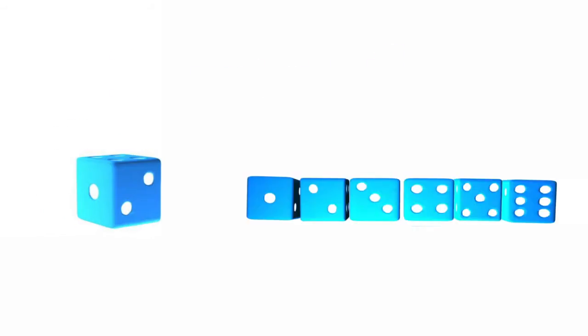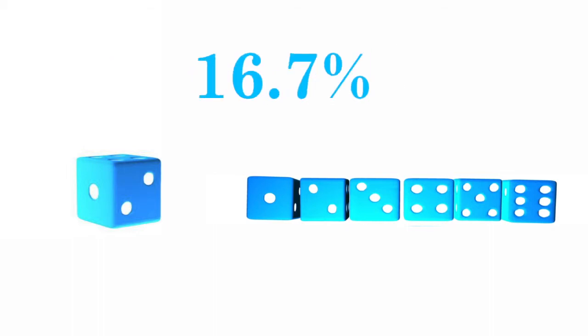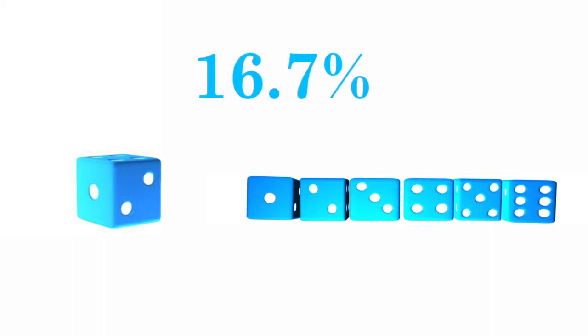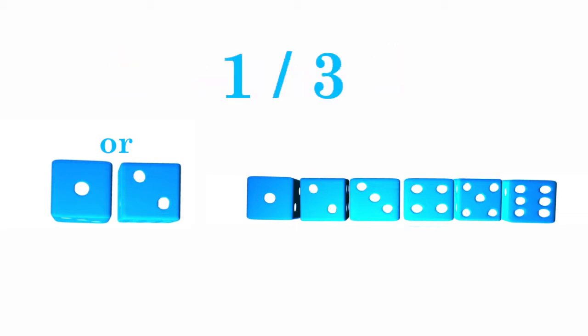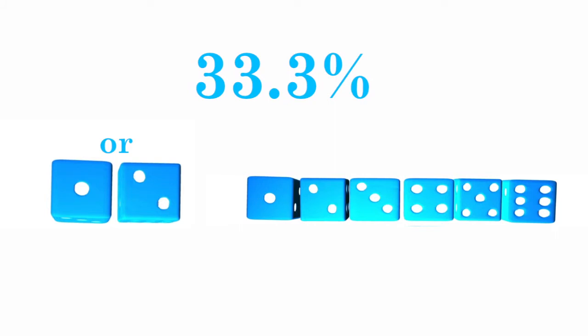To give another example, if we rolled a die that has six sides, we would say that it has a one out of six chance of landing on a particular side, or a 16.7% chance. The odds that it would land on two possible outcomes, like one or two, would have the odds of two out of six, or one-third, or 33.3%.